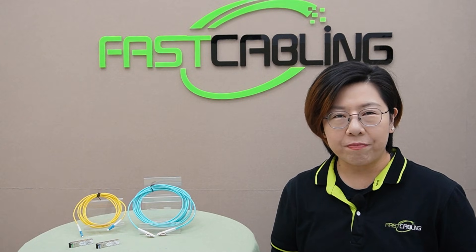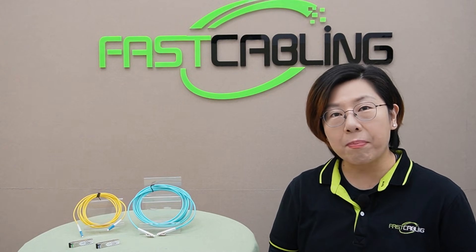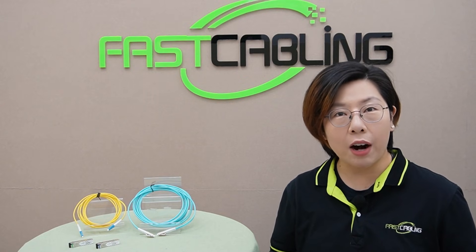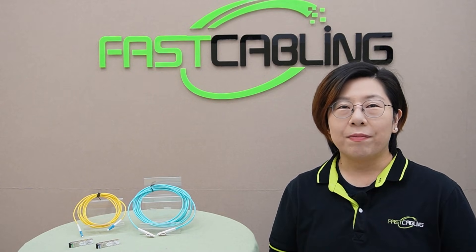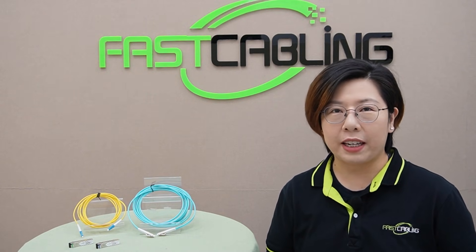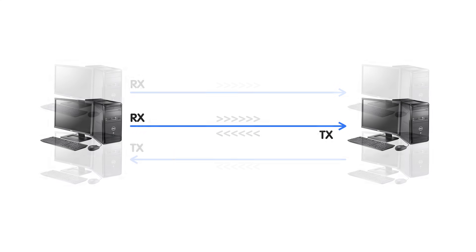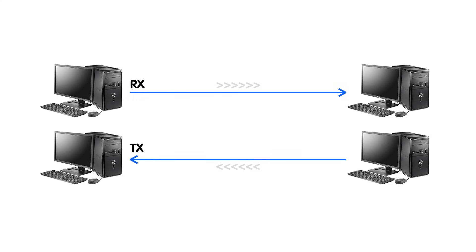Now let's talk about RX and TX. RX is for receive — it's like your inbox for data. TX is for transmit — your outbox. Together, they form the foundation of fiber communication. In a simplex cable, one fiber handles both RX and TX using different wavelengths. In duplex cables, each fiber has a dedicated job: one for RX and the other for TX.